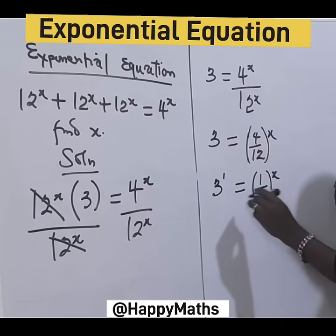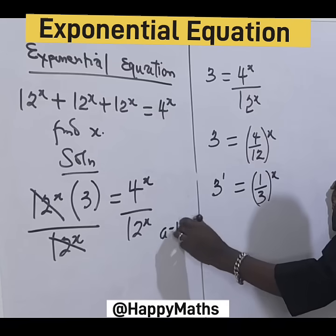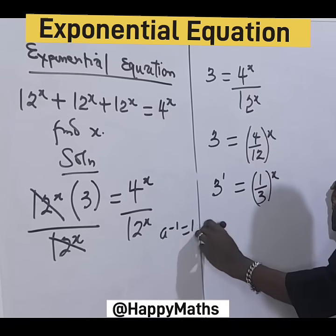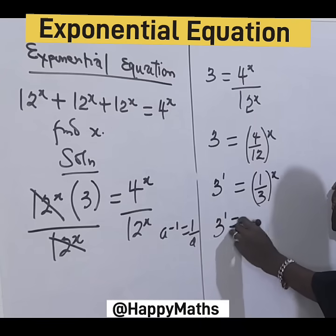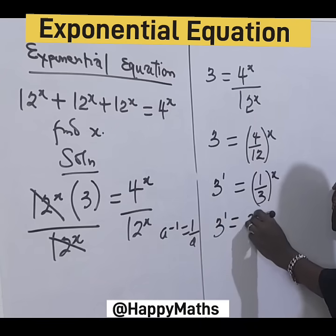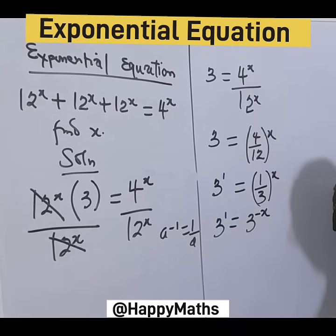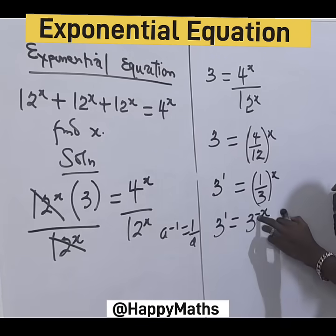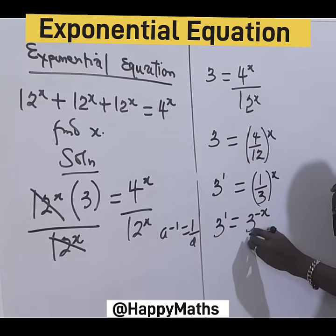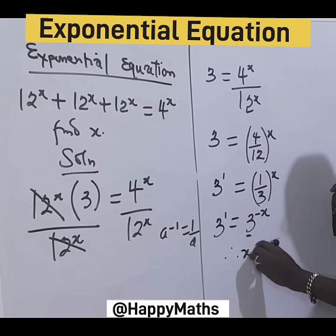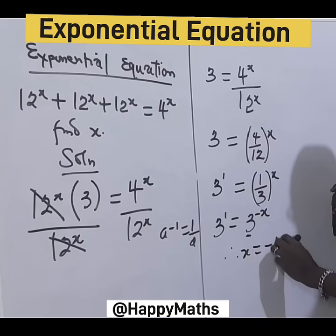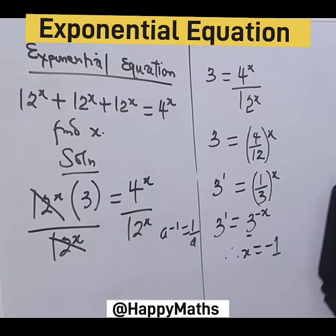Note that a to the negative 1 is simply 1 over a. So this is 3 raised to the power of negative s. Since the bases are the same on both sides, we can therefore calculate s is equal to minus 1. That is the final answer.